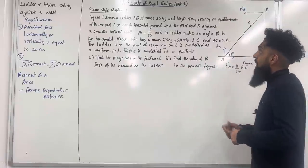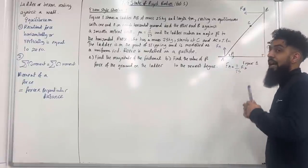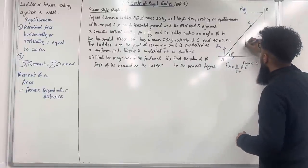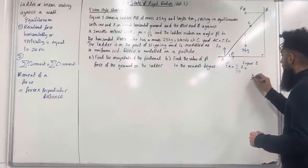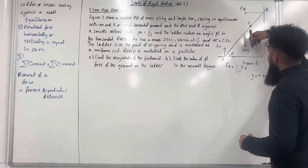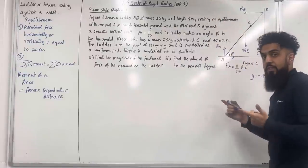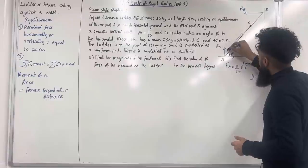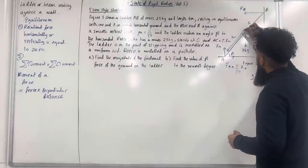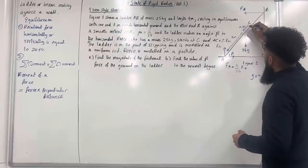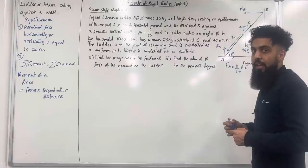The ladder has a mass of 25 kg and is modelled as a uniform rod, so the weight of the ladder acts at the centre. The weight is 25g where g = 9.8 m/s². This splits the 4-metre ladder into two equal parts of 2 metres each. The distance AC = 2.8 metres, so the remaining distance from C to the centre is 0.8 metres, and from the centre to B is 1.2 metres.